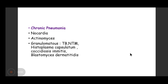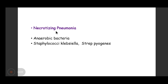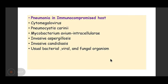Chronic pneumonia is caused by Nocardia and Actinomyces. Granulomatous pneumonia is caused by Mycobacterium tuberculosis, non-tubercular mycobacteria, Histoplasma capsulatum, Coccidioides immitis, and Blastomyces dermatitidis. Necrotizing pneumonia is caused by anaerobic bacteria, Staphylococcus, Klebsiella, and Streptococcus pyogenes. In immunocompromised hosts, pneumonia can be caused by CMV, Pneumocystis jirovecii, Mycobacterium avium intracellulare, invasive aspergillosis, invasive candidiasis, and usual bacterial, viral, and fungal organisms. Immunocompromised includes AIDS patients, transplant recipients, and those on immunosuppressive therapy.